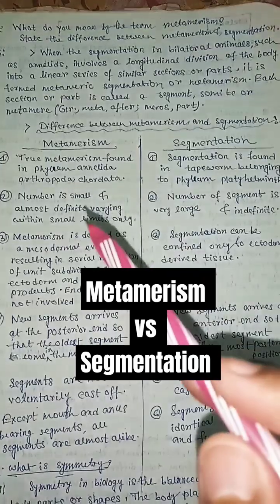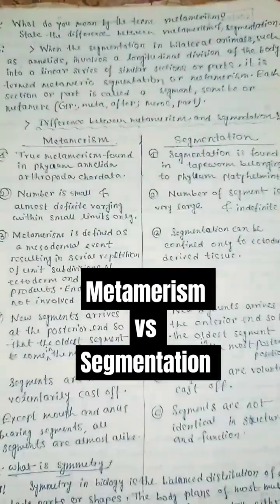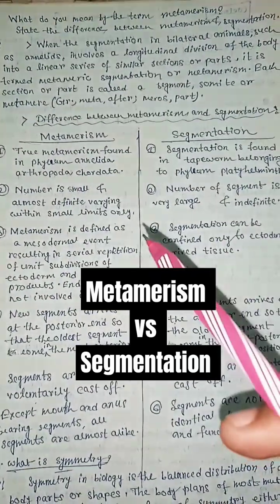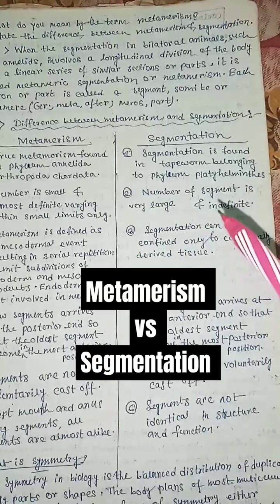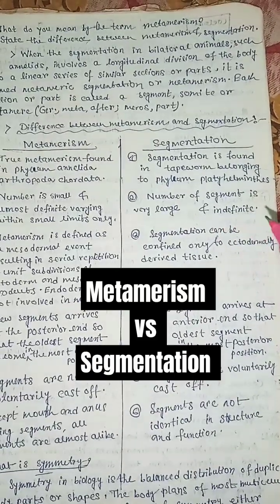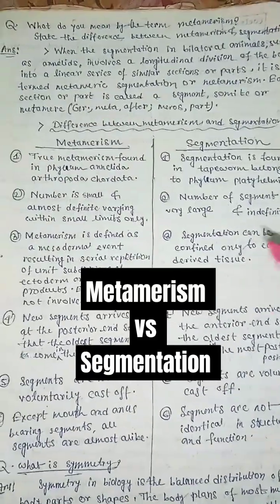In metamerism, the number of segments is small and almost definite, varying within small limits only. The number of segments in segmentation is very large and indefinite.